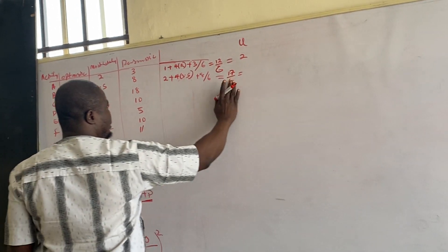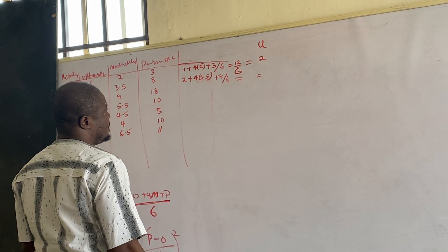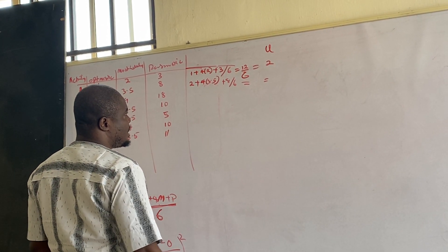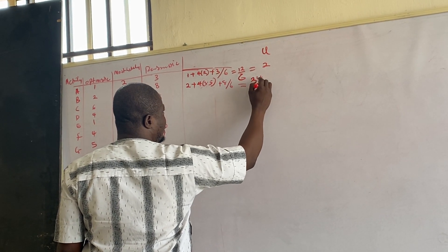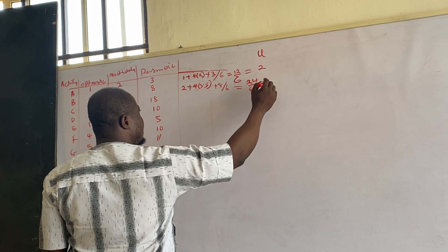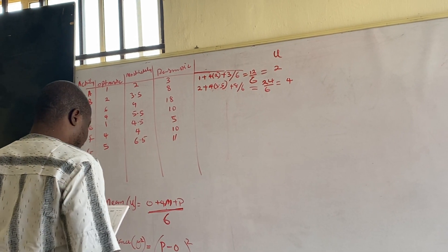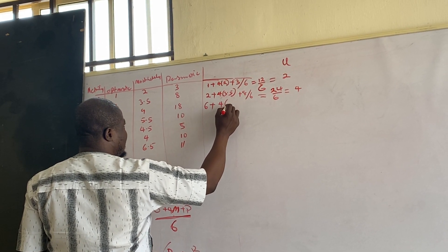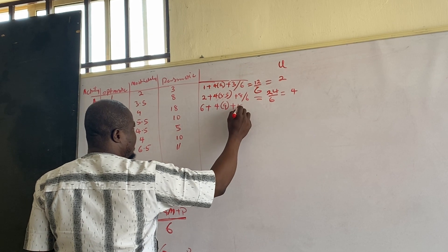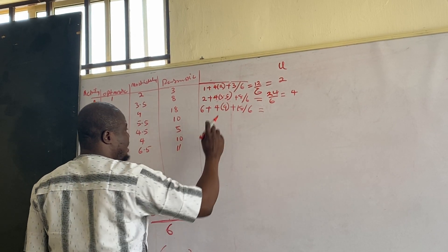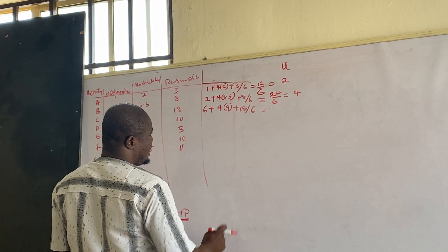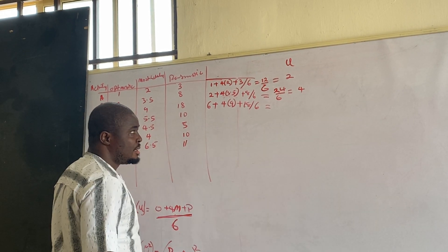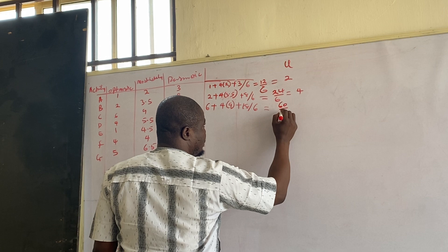3.5 times 4 is 14. Then 14 plus 10 gives 24, so that is 24 over 6. The next term is 6 plus 4 times 9 plus 18, all divided by 6. 4 times 9 is 36, plus 6 is 42, plus 18 is 60. So 60 over 6.